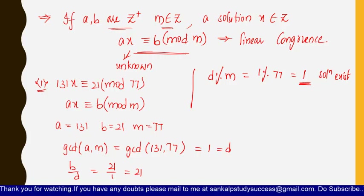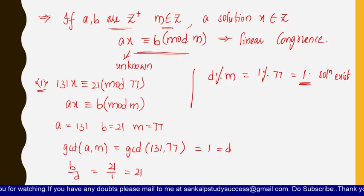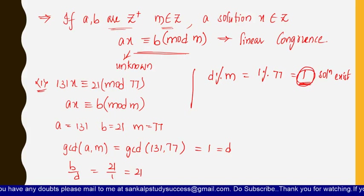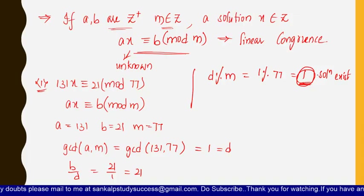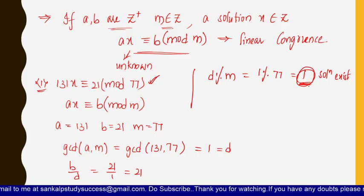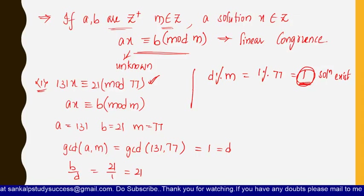If d mod m gives an integer, a solution exists. If the value is 1, there is one solution; if 2, there are two solutions; if 3, three solutions. But if the result is a decimal (float), then there is no solution. For this equation, d mod m = 1, so there is exactly one solution.